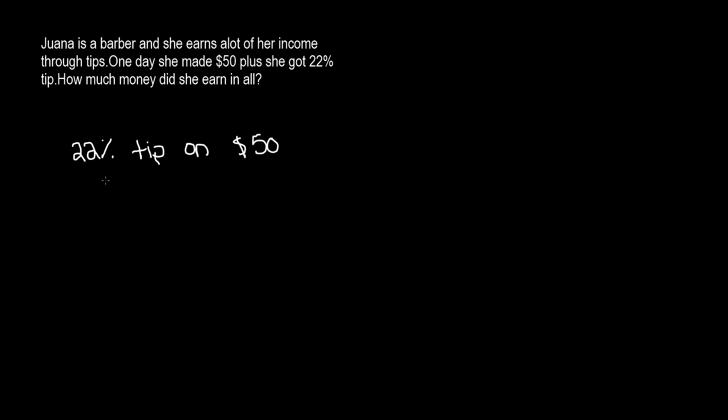First let's write our problem down, which is 22% tip on $50. So first we have to convert the percent into a fraction. 22% can be written as 22 over 100 because a percent is a number out of 100. So 22 over 100. Now we need to multiply this by 50.